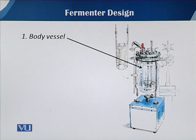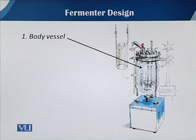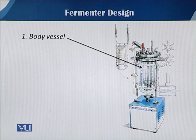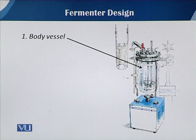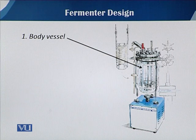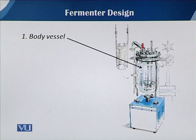The first basic part is the body vessel. The body is basically the vessel or container in which the fermentation process is carried out. When we mass culture an organism, the organism is the hero of the fermentation process, and the fermenter vessel or body vessel acts as the stage. All kinds of fermenters have a body vessel, either made of glass, stainless steel, or bricks when we talk about biogas digesters.